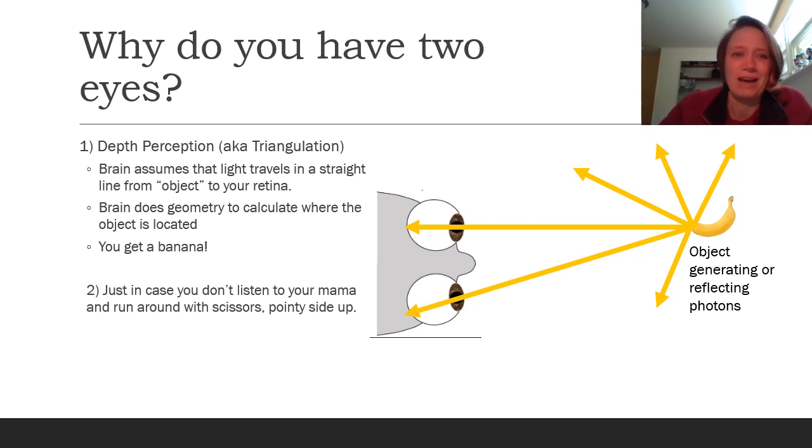The other reason we have two eyes from a biologist perspective is that vision is such an important adaptation for humans that having a second eye gives you a spare just in case anything bad happens to your first. But triangulation is a really important adaptation as well.